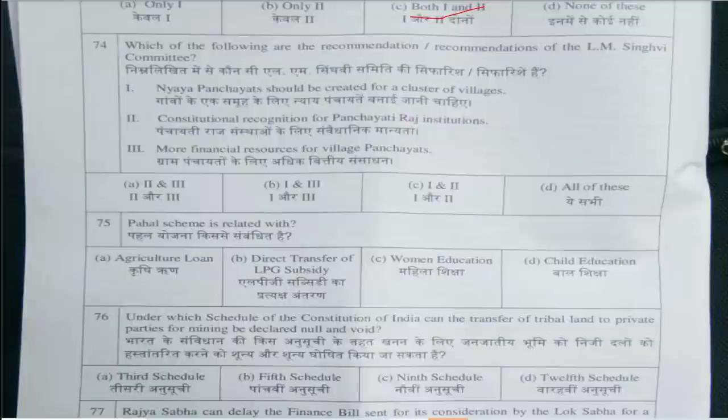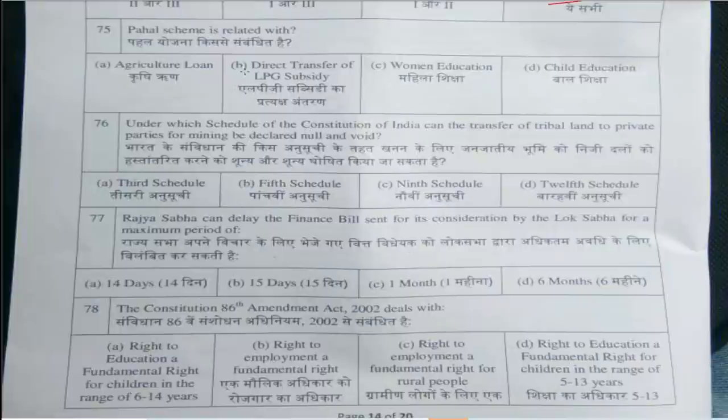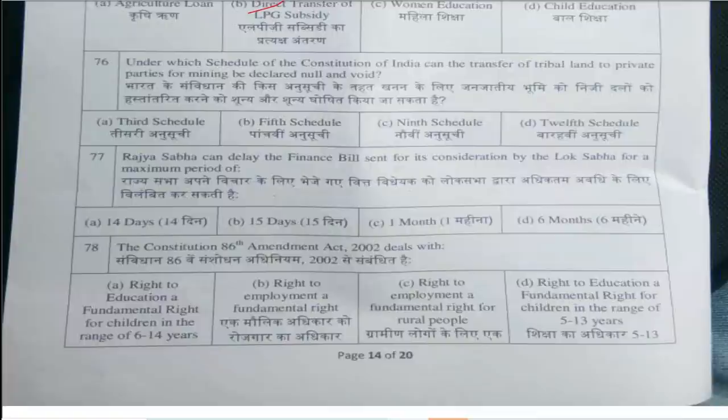Question number 71: Which of the following states doesn't have a bicameral legislature? Answer is option D, West Bengal. Question number 72: Which state first adopted Panchayati Raj in India in 1959? Answer is option A, Rajasthan. Question number 73: Which of the following is correct regarding the Panchayati Raj system — the Act will not apply to the Darjeeling district of West Bengal, and allotment of seats in constituencies for Panchayat elections cannot be questioned in any court of law. Answer is option C, both one and two.